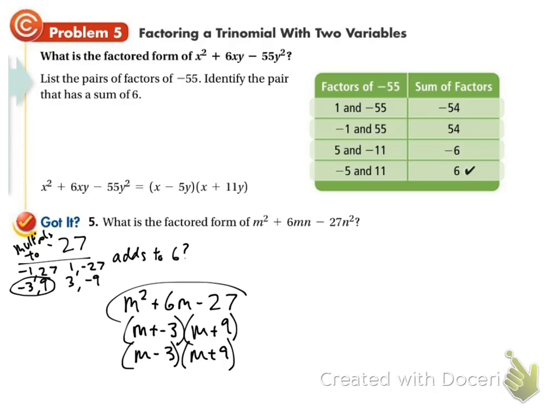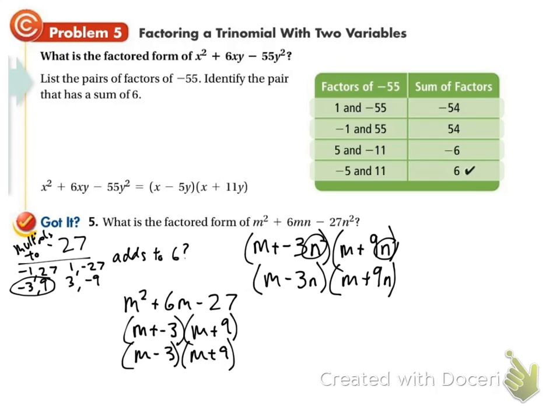But that's not what we're working with. We have n's in our problem. So what we do then, we're going to do m plus the negative 3 and then we tack on an n. We're going to do m plus 9 and tack on the n. If we clean it up, we get m minus 3n and m plus 9n. That's our answer. So treat it as if it didn't have the extra letter. And then once you get to your answer, you tack on that extra letter.